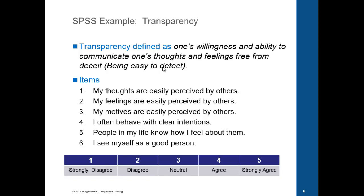You can see how that concept is captured using these six items. The first three items are getting at the thoughts, feelings and motives. My thoughts are easily perceived by others. The second one is feelings. The third one is motives. Item number four says, I often behave with clear intentions. There's no deception. Number five, people in my life know how I feel about them.